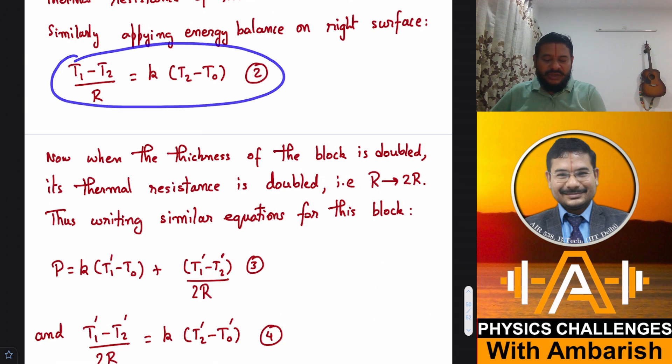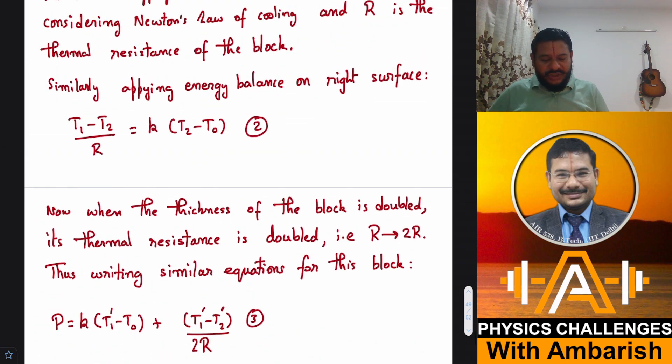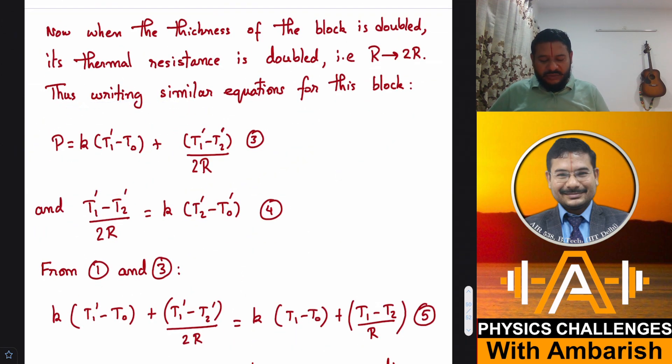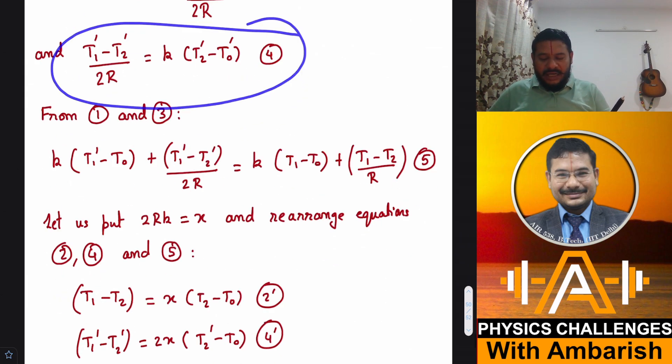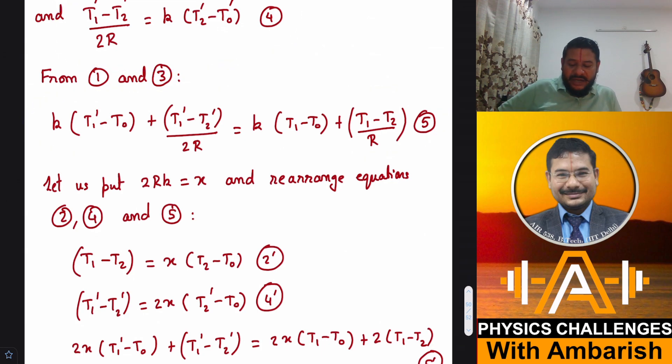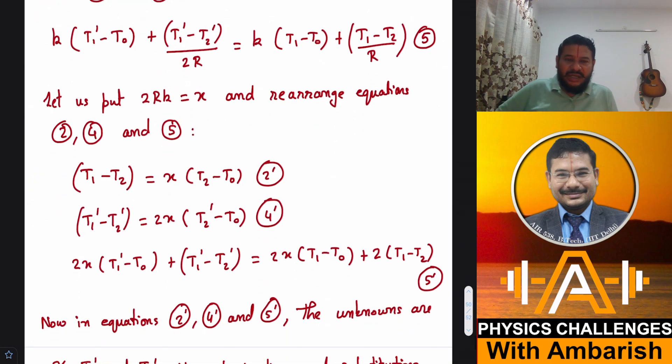So now I have four equations and now I need to do some mathematical manipulation to get the desired answer. I can equate the RHS of both these sides. Instead of handling so many unknowns, I can multiply each of these equations by R and then consider RK as one variable called X.